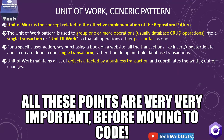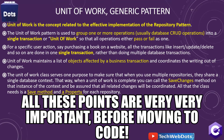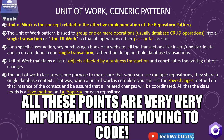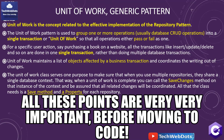Unit of Work maintains a list of objects affected by the business transaction and coordinates the writing out of changes to the persistent storage — that is, the SQL Server or database. The Unit of Work class serves one purpose: to make sure that when you use multiple repositories, they share a single database context. When a unit of work is complete, you call the SaveChanges method on that context instance.